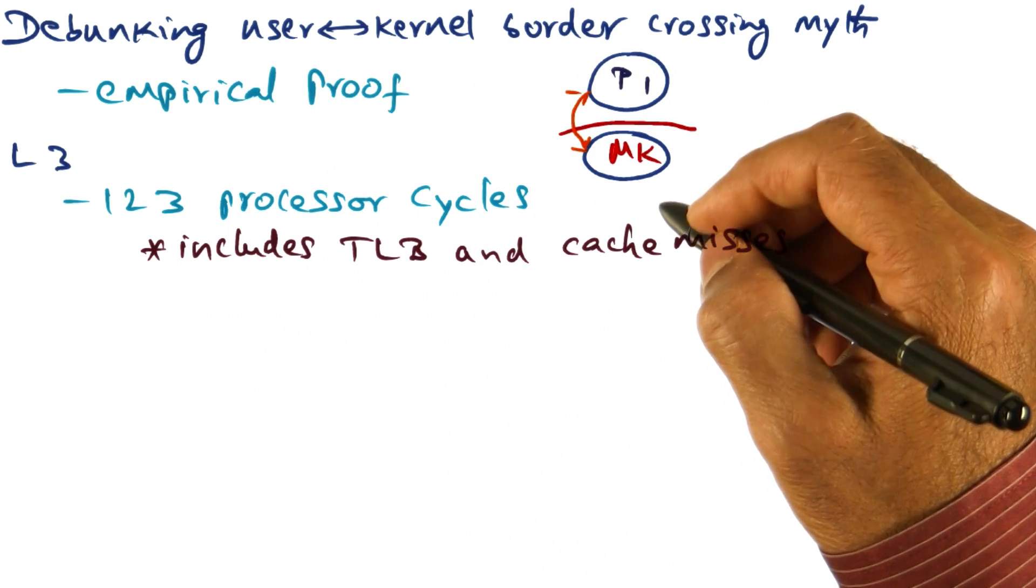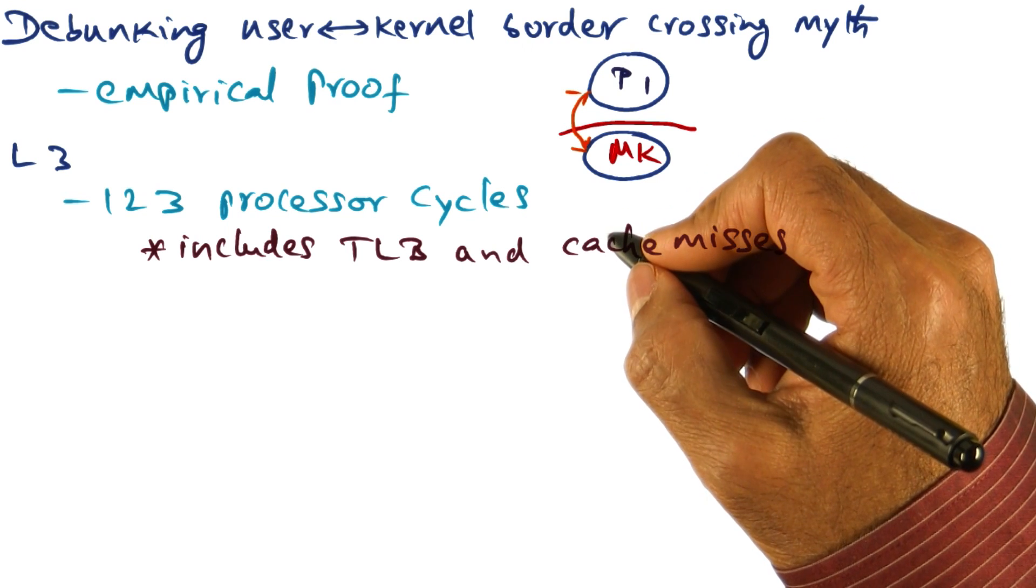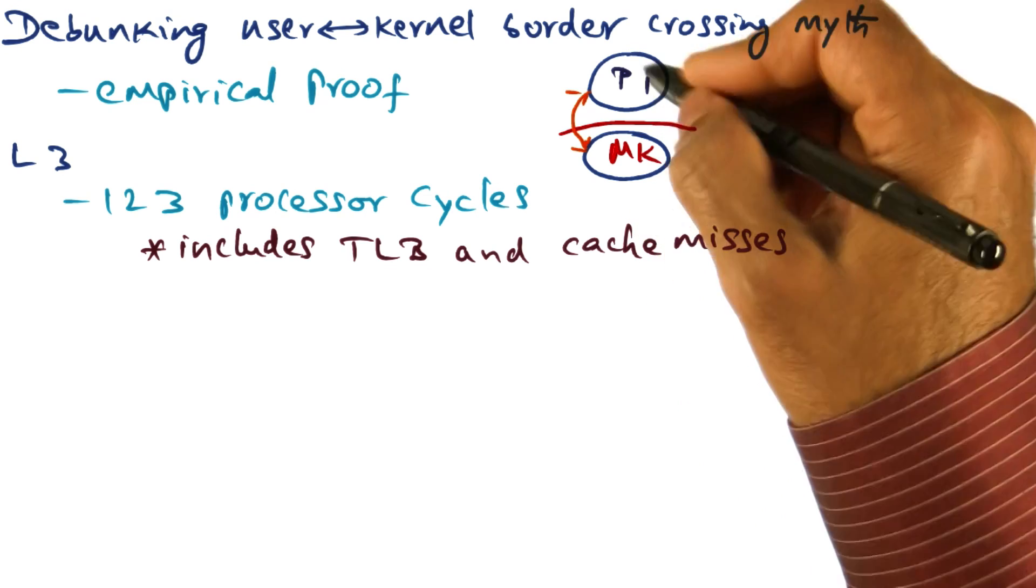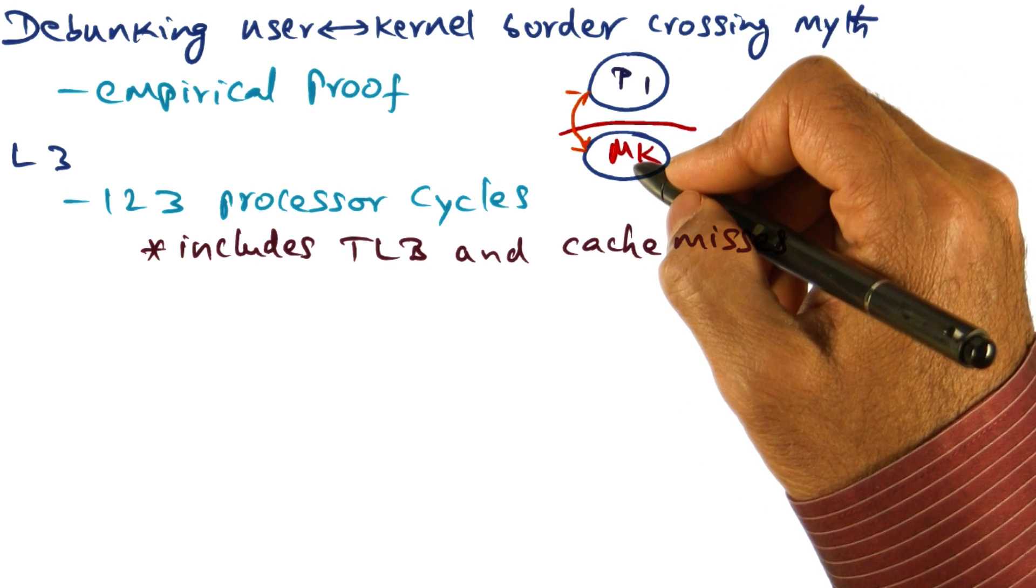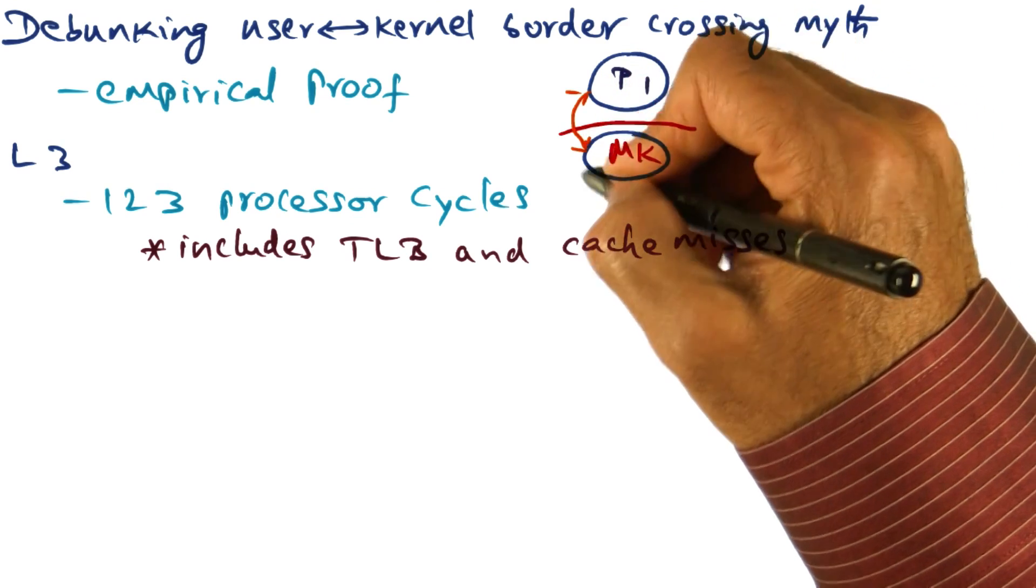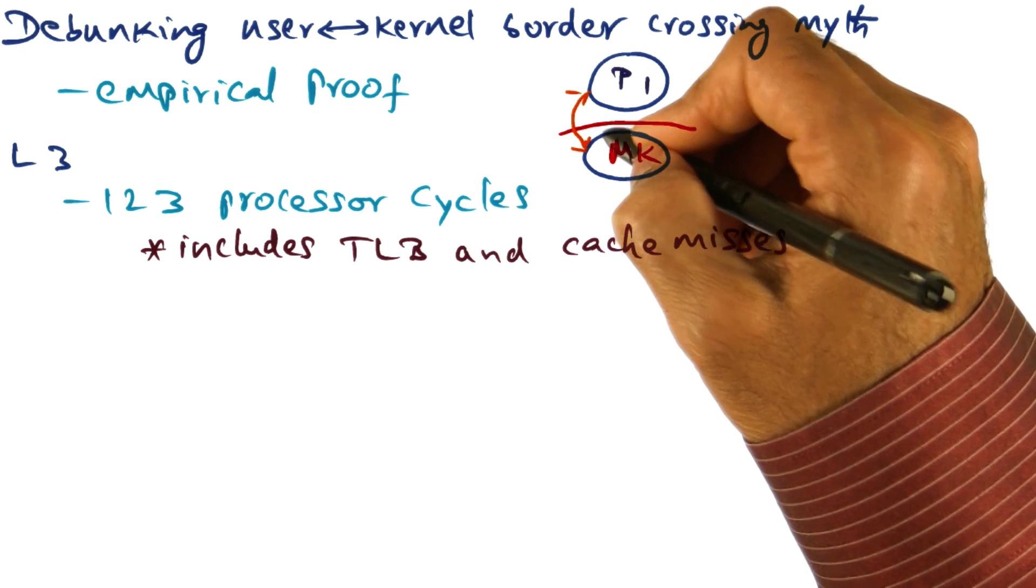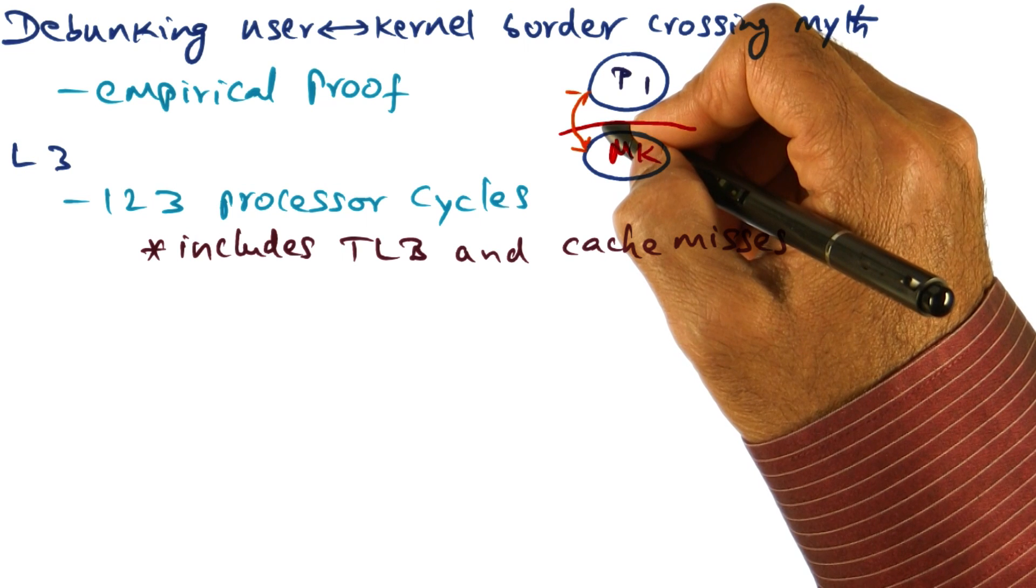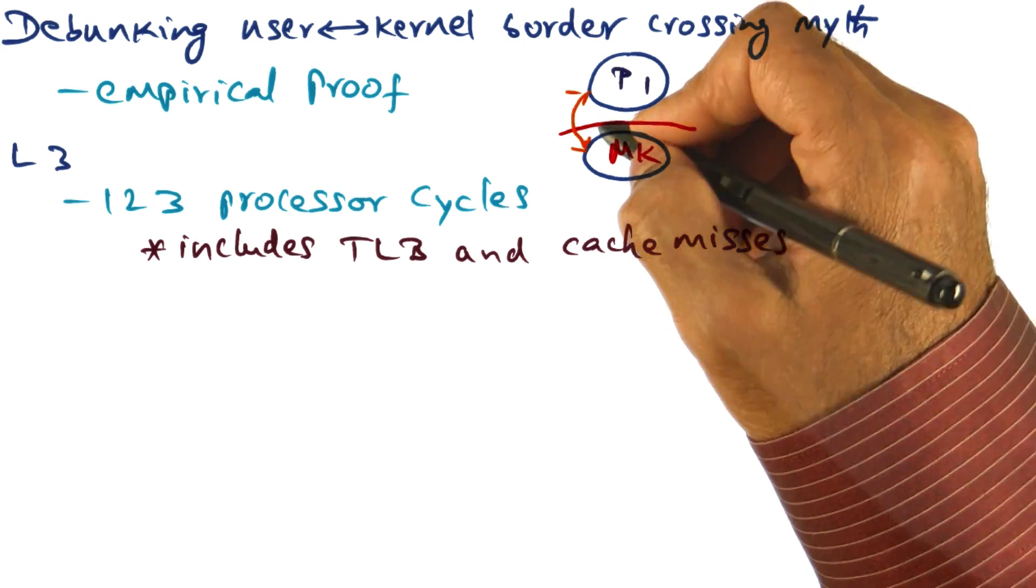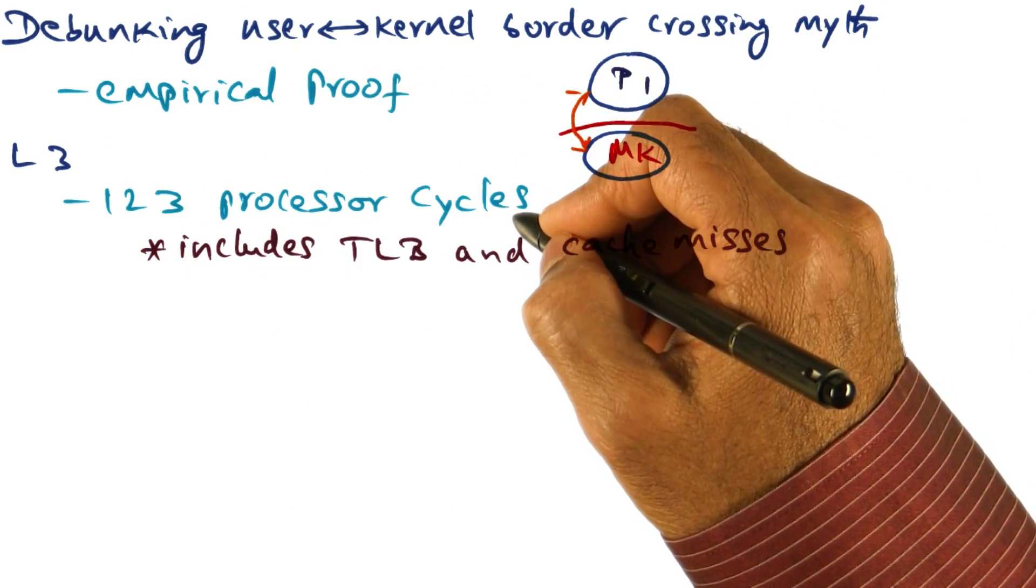And L3 goes one step further. It actually counts through a back of the envelope calculation what will be the minimum cost involved in doing this border crossing, or in other words, how many cycles will the instructions that are needed in order to do this border crossing take on a particular processor architecture. And they count the number of processor cycles and they show that the number of processor cycles needed is about 107. And L3 microkernel accomplishes that in 123 processor cycles.